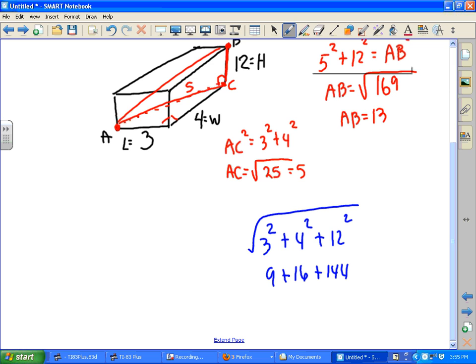And if you take the square root of all this, that would be your diagonal. So this would be the square root of 169. So D would be 13.